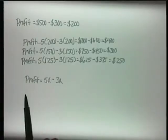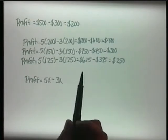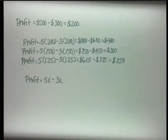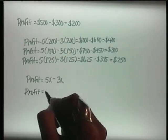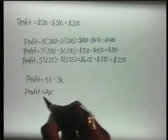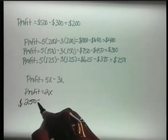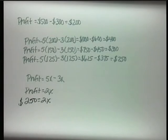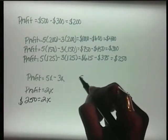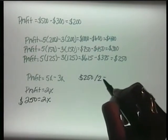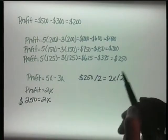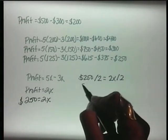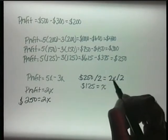Now, let's rewrite the profit equation with the variable expression simplified. Profit equals 5x minus 3x. What will the profit equation be if you substitute in the amount of profit we originally projected? It would be profit is equal to 2x, and $250 would equal 2x. The resulting equation can be solved using several different methods. First, we'll let Joy use the algebraic method to solve this. You have $250 divided by 2, which equals 2x divided by 2. 250 divided by 2 is equal to $125, and that will equal x, since your 2s cancel out.